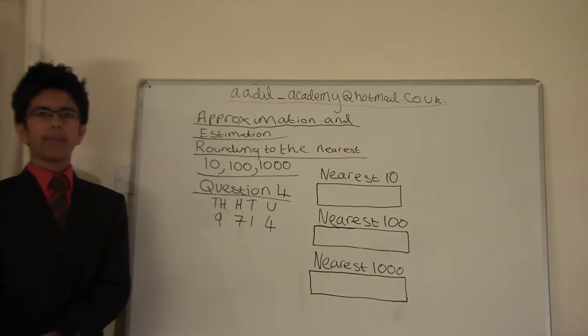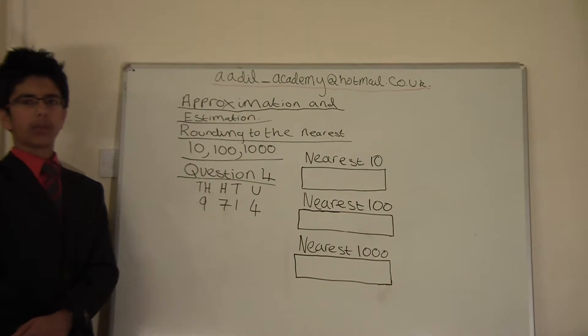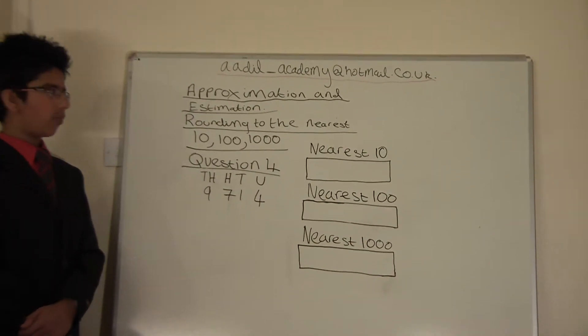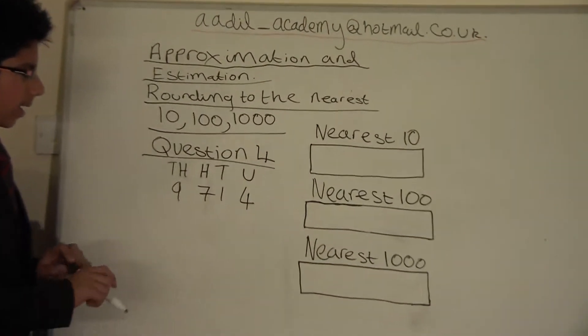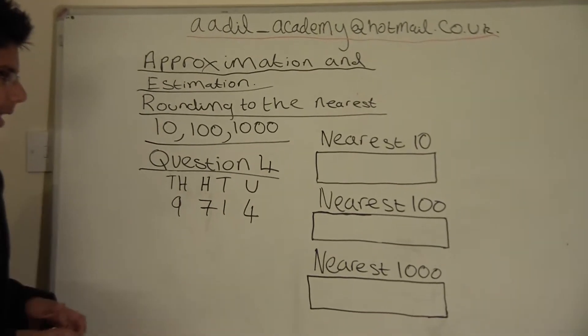Hello and welcome to Adil's Academy. Today we'll be doing approximation and estimation, rounding to the nearest 10, 100, and 1000. This is question number four. Today our number is 9714.